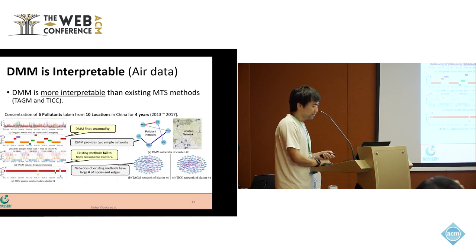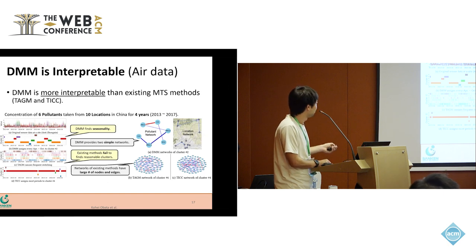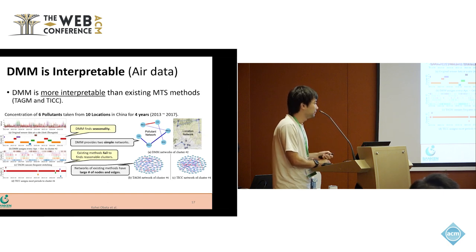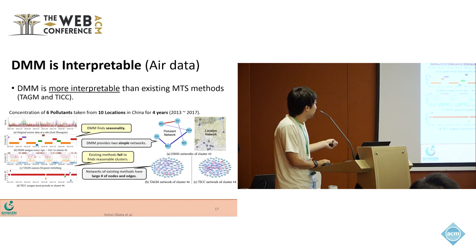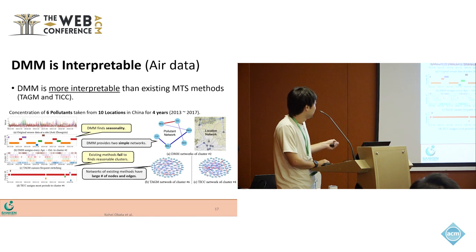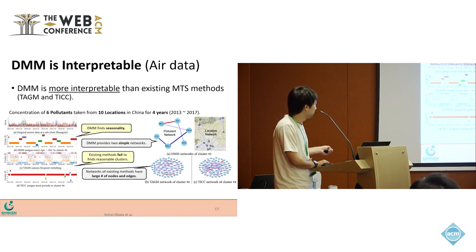We then compare DMM with existing multivariate methods to show the interpretability of DMM. These are the clustering assignments of DMM and the comparison method. As you can see, DMM finds seasonality. On the contrary, existing methods fail to find reasonable clusters.